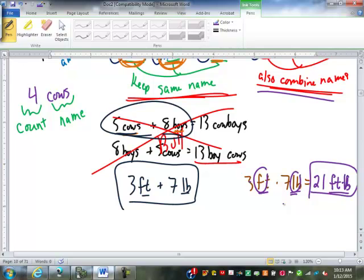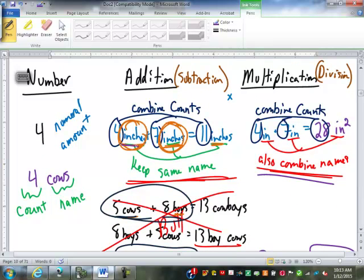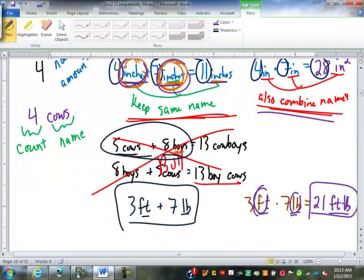Now you might be thinking, I still don't see what the big point is. Well, all of the rules you've been taught for all the other forms of numbers come from this basic rule of working with whole numbers. When you add, you must have the same name, and you're going to keep the same name. When you multiply, you do not need the same name, because you're going to combine the names.